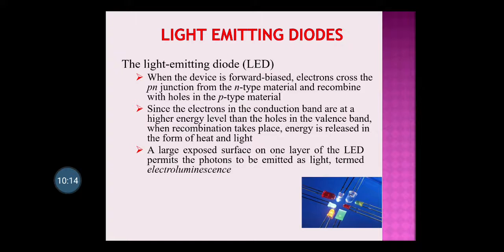As the diode is formed by connecting n-type and p-type semiconductor together, n-type has majority carriers as electrons and p-type has majority carriers as holes. They travel and recombine, forming a depletion layer at the center. Since the electrons in the conduction band are at a higher energy level than the holes in the valence band, recombination takes place — energy is released mostly in the form of light and a little as heat. A large exposed surface on one layer of the LED permits photons to be emitted as light, termed electroluminescence.